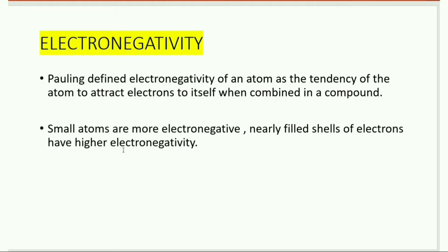Electronegativity was first defined by Pauling. Pauling defined electronegativity of an atom as the tendency of the atom to attract electrons to itself when combined in a compound. For example, consider atoms A and B forming a bond A-B with two electrons in the bond. If A has high electronegativity, A will attract those electrons to itself, and we say A is electronegative.